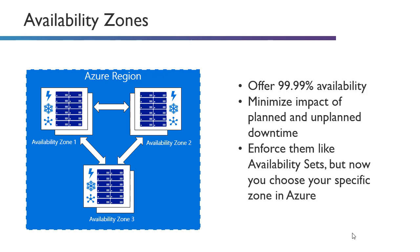There was a region outage in South Central at one point where the data center essentially had some power issues and went down. Just because you were in an availability set did not help you — you were completely out. All the backup generators didn't kick in properly, and people had complete outages. But availability zones would be two data centers far enough apart to ensure that in the event of something like that happening, you would still be online, providing your machine was in the other availability zone.